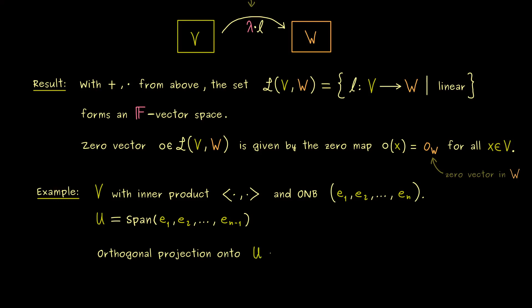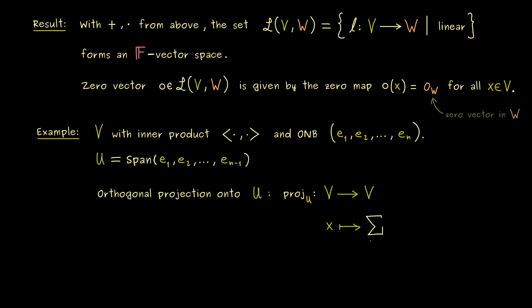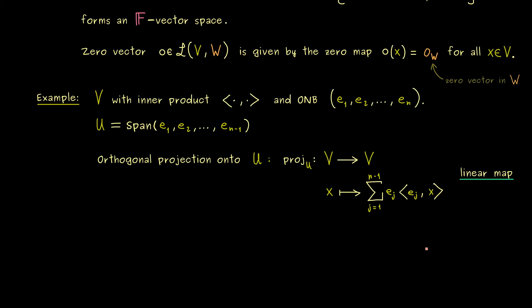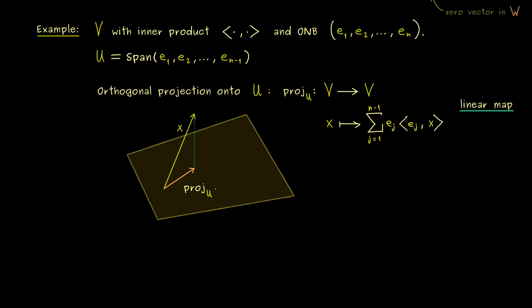And indeed, this defines a linear map on V. So maybe let's call the map projection with index U. And as already mentioned, this goes from V into V again. And there we already know the definition can be written with the inner product and a sum. More precisely, we have the sum that goes from j equals 1 to n-1, and then we have the vector ej with the scalar ⟨ej, x⟩ in the inner product with x. So this is the orthogonal projection onto U as we know it. And now we can see it's a linear map as well. This is not hard to see because we already know that the inner product is linear in the second argument.